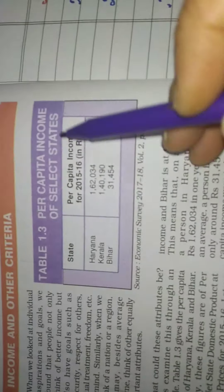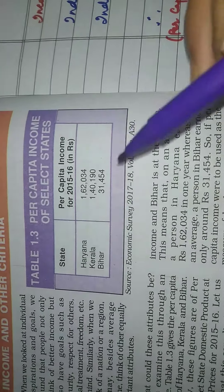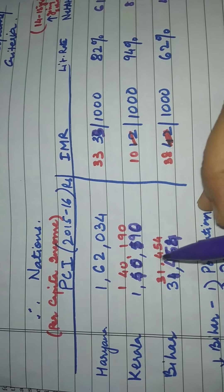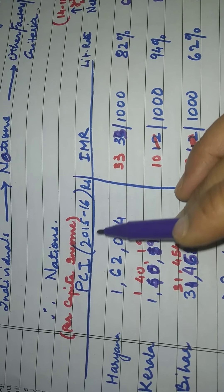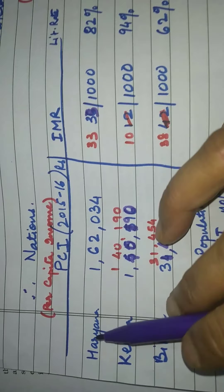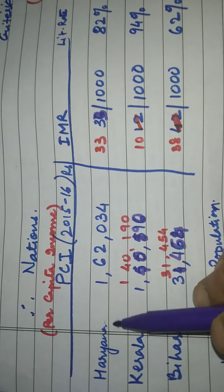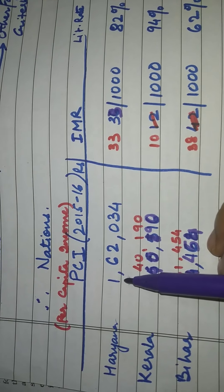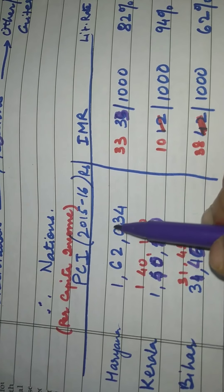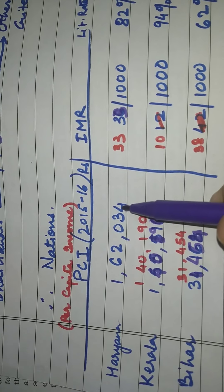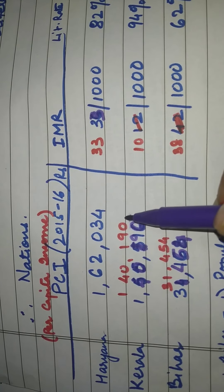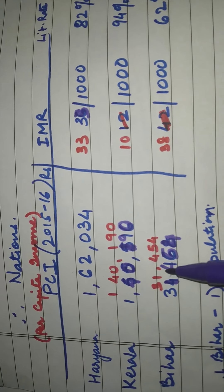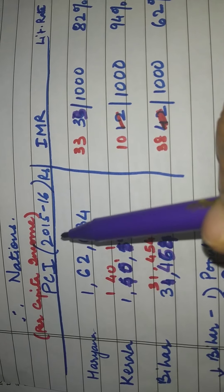In your book this table is given. I will explain it first, and then you have to literally learn it. I have a table here. The PCI is the per capita income, and the records have been taken in the year 2015-16. I have three states: Haryana, with a per capita income of rupees 1,062,034; Kerala, with rupees 1,040,190; and Bihar, with rupees 31,454 for the year.